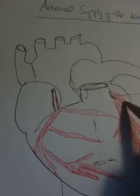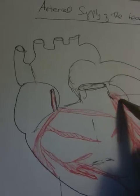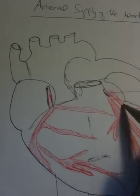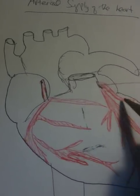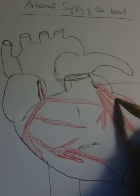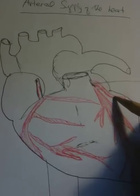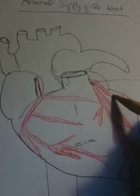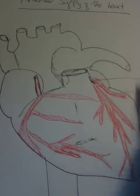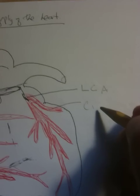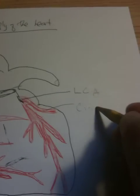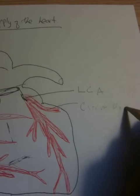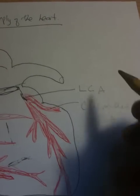The branch that divides to the heart's left region here — which to us looks on the right but is actually left — is called the circumflex artery. Remember that: circumflex artery.